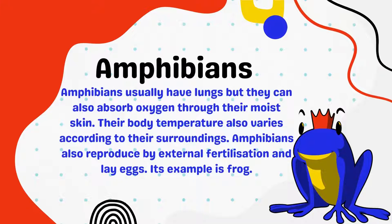Amphibians usually have lungs but they can also absorb oxygen through their moist skin. Their body temperature also varies according to their surroundings. Amphibians also reproduce by external fertilization and lay eggs. An example is a frog.